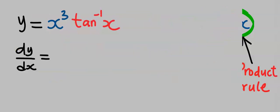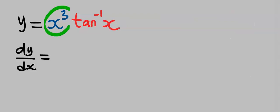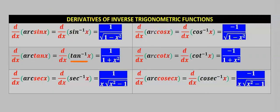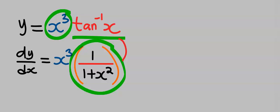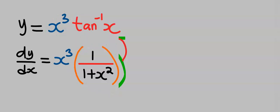To solve this problem, keep x to the power of 3 constant and differentiate tan inverse of x. When you differentiate tan inverse of x you get 1 divided by 1 plus x squared. This gives us the first part of the product rule, and we put a plus sign.